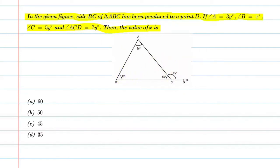Let's start this question. First of all, we will write the given conditions. So we can say angle A is equal to 3Y, angle B is equal to X, angle C is equal to 5Y, and angle ACD, which is the exterior angle, is equal to 7Y. Alright, so let's start the solution.